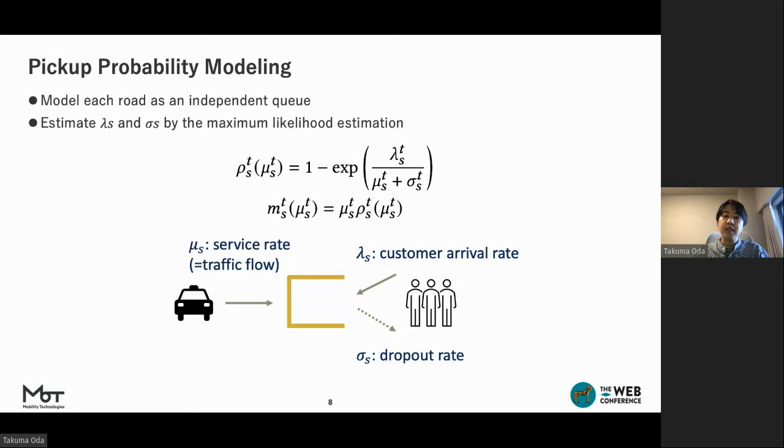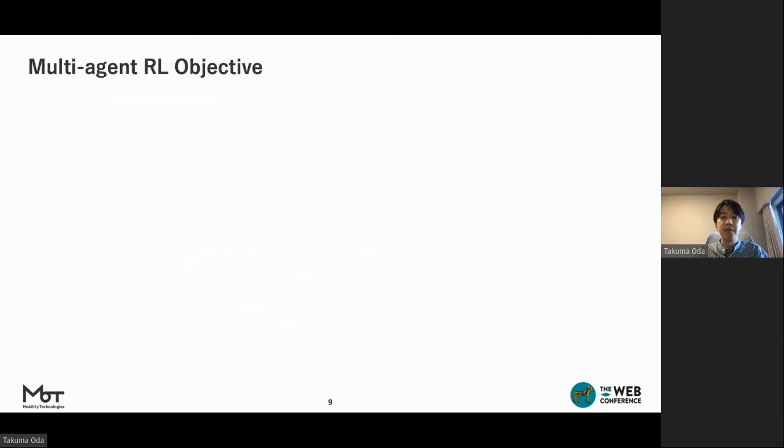Here, lambda and sigma are unknown parameters, which can be estimated by the maximum likelihood estimation. As can be seen, pickup probability depends only on the service rate, i.e. cruising traffic on that road. And the traffic flow can be computed by propagating state distribution under the current initial condition and policy, which is the same as the visitation state count in IRL literature. This concludes that an agent policy depends on other agents only through expected visitation count.